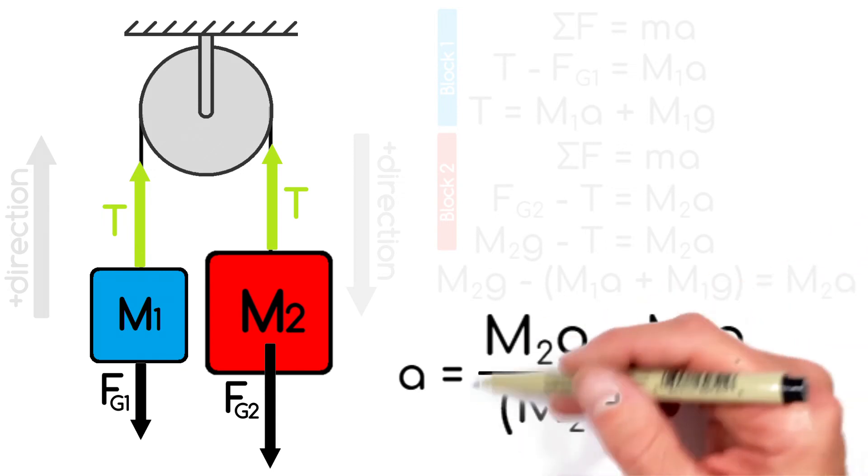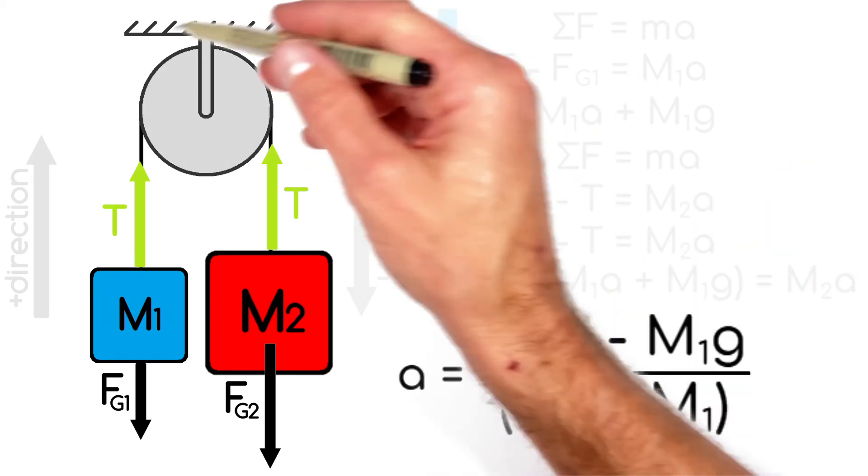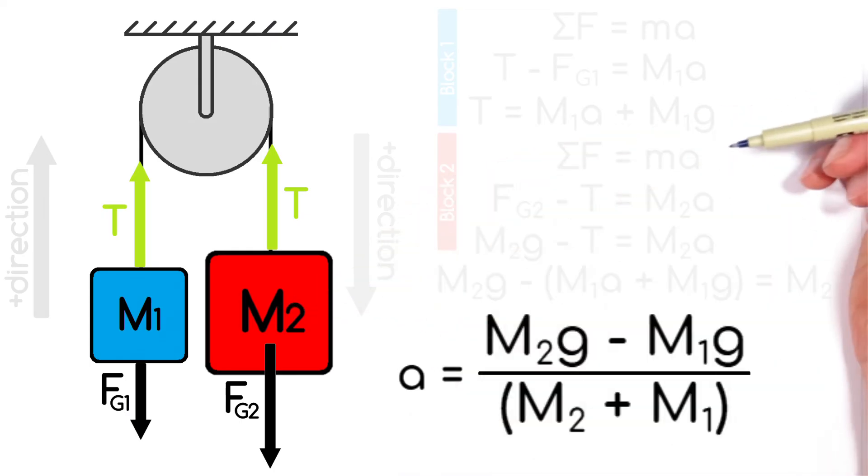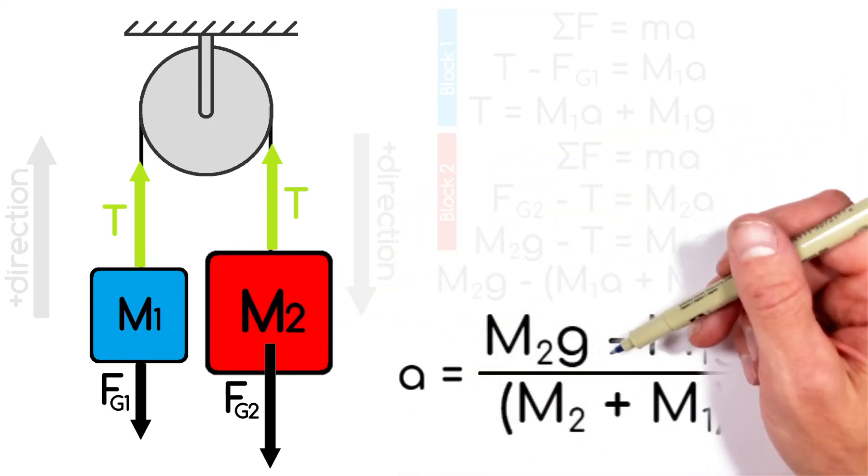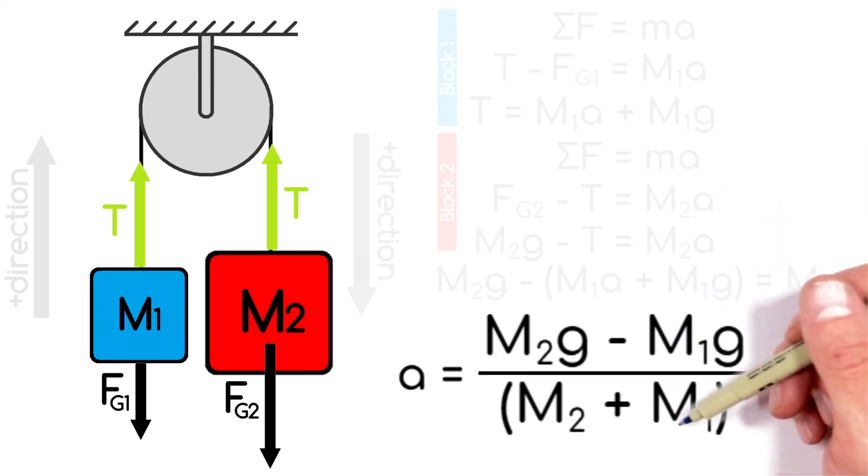And what's important to recognize in this result here is that what we actually have is Newton's second law applied to the entire system here. You'll see, a is equal to this numerator here, which is really just the net force divided by the total mass.